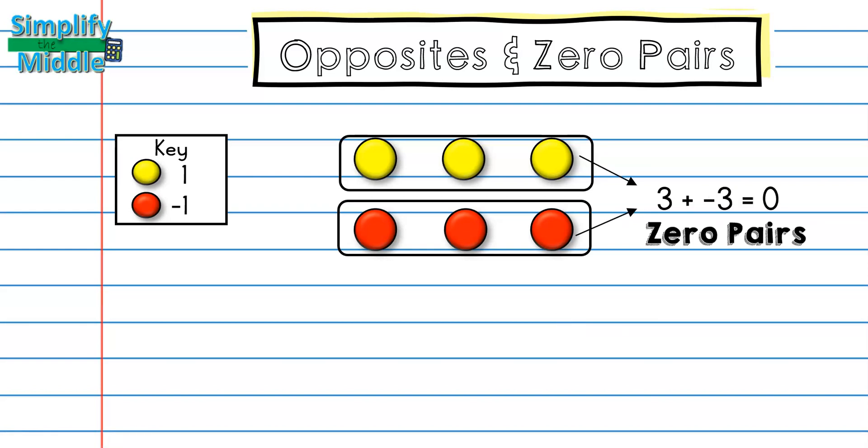This is best describing a situation. For instance, if you were to earn $3 doing chores, and then you spend $3, you don't have any money left over. Situations can represent zero pairs as well.